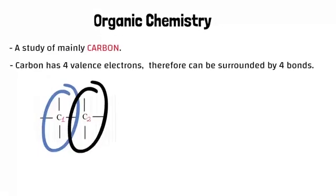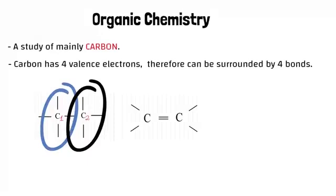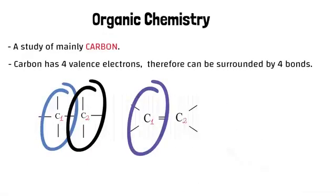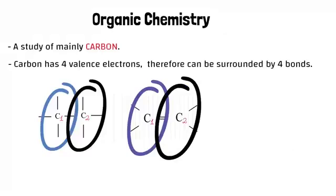With structure number two, we can see here we have a double bond between carbon atoms. But you can still see that with carbon number one, it's surrounded by four bonds, as well as carbon number two, surrounded by four bonds. Remember that both carbons will share this double bond, so in that way they'll be surrounded by four bonds.